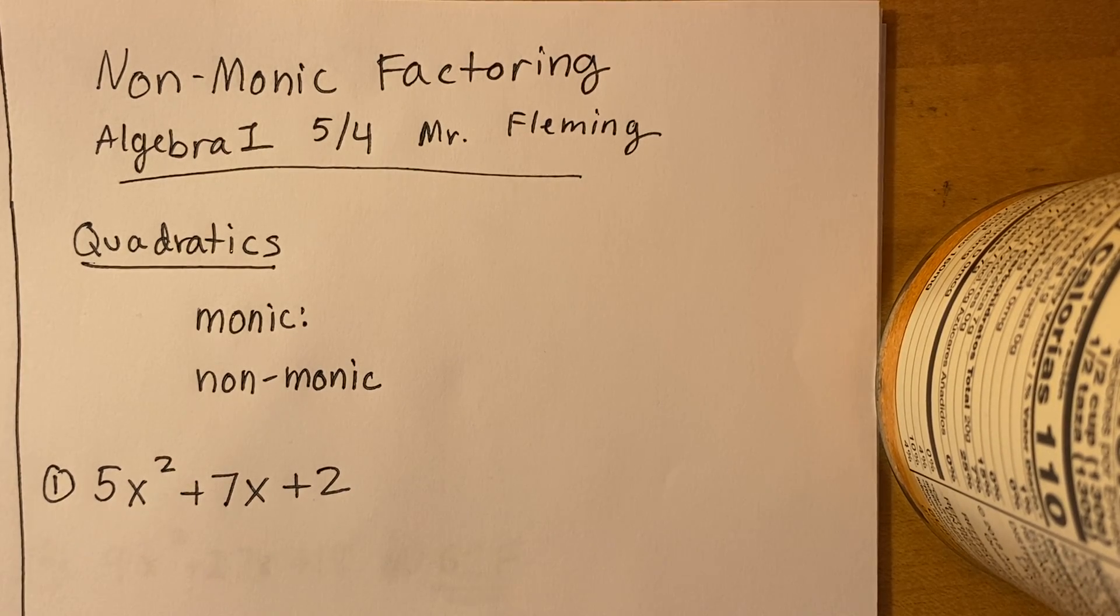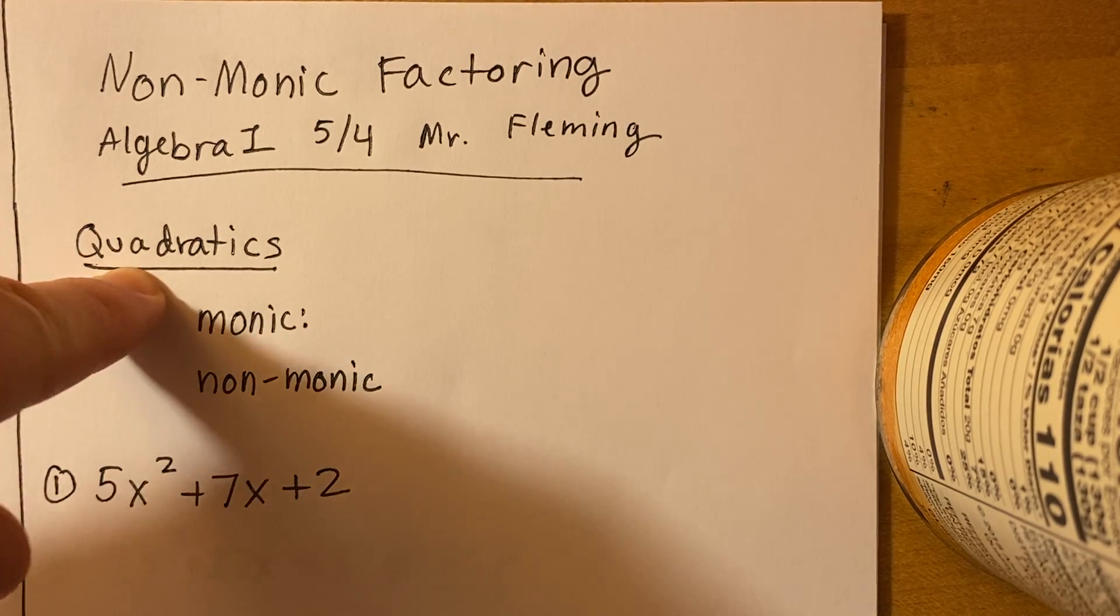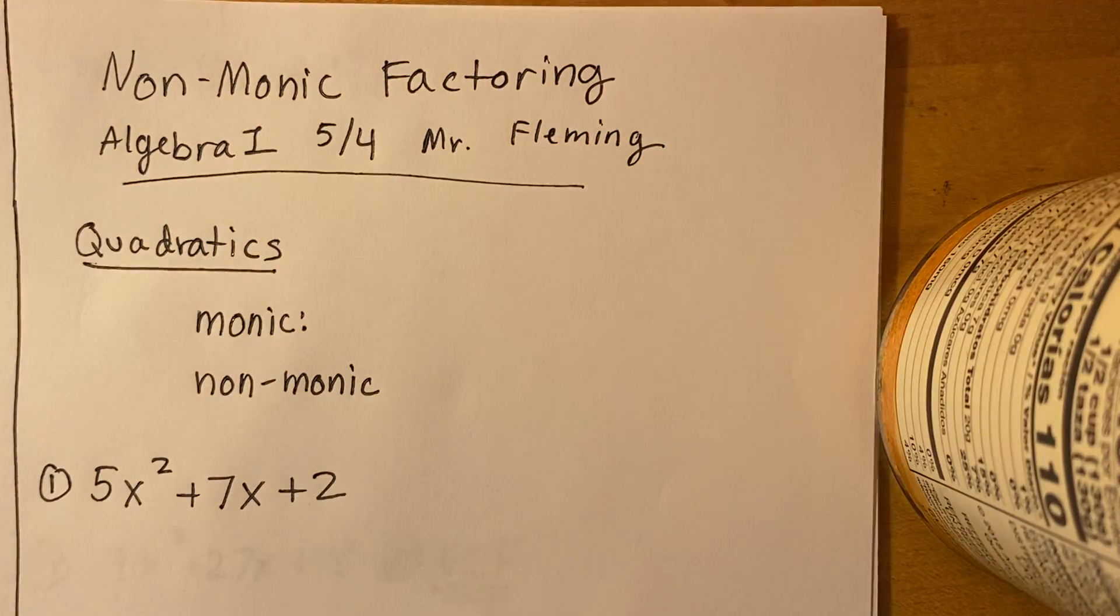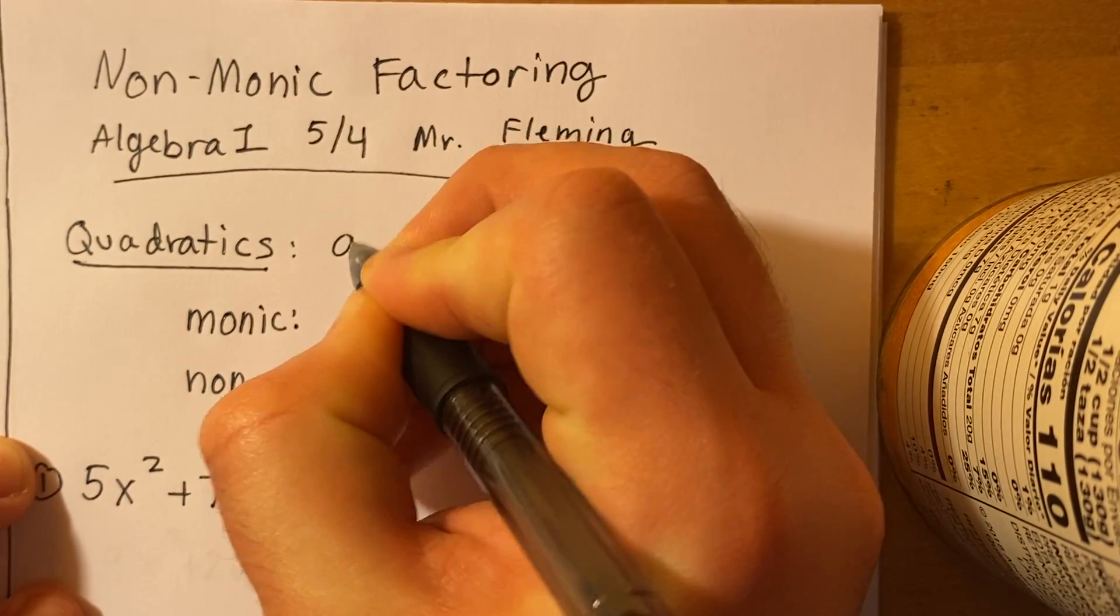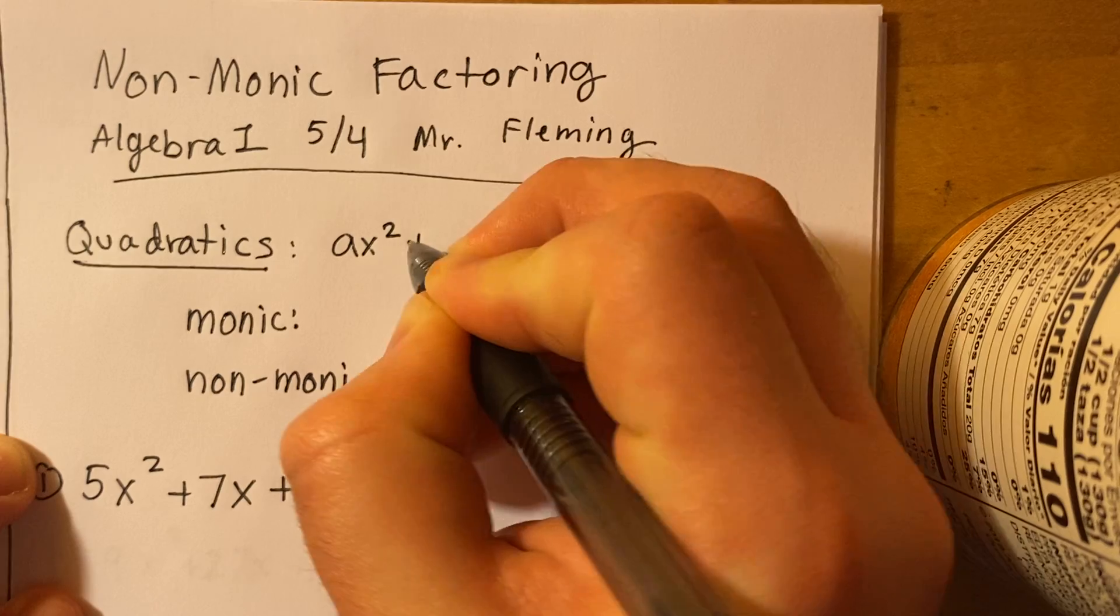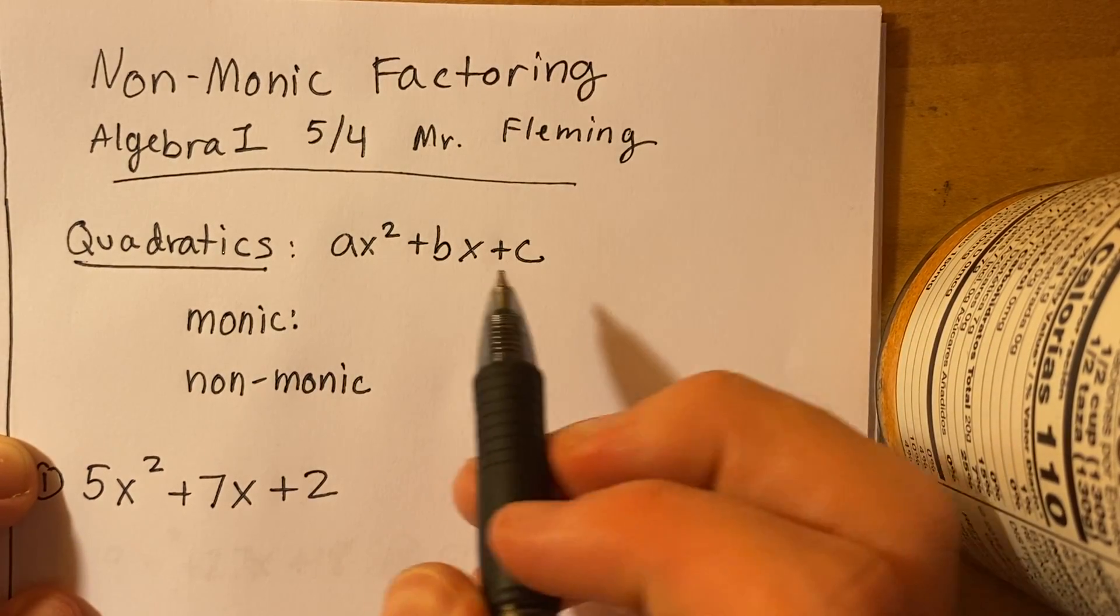So today we're still talking about quadratics, and we're talking about something called non-monic factoring. So a quadratic is defined by ax² + bx + c, where a, b, and c are whole numbers.